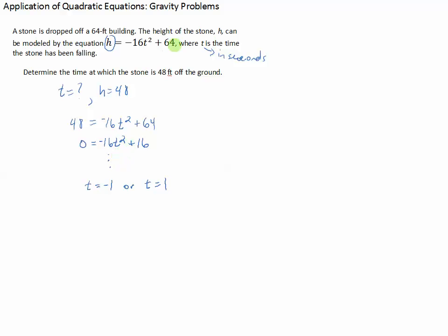Well, t is the time the stone has been falling, so this makes no sense here. You can't fall for negative 1 second. So the time is 1 second. It takes 1 second for the stone to drop from the top of the building at 64 feet down to 48 feet.